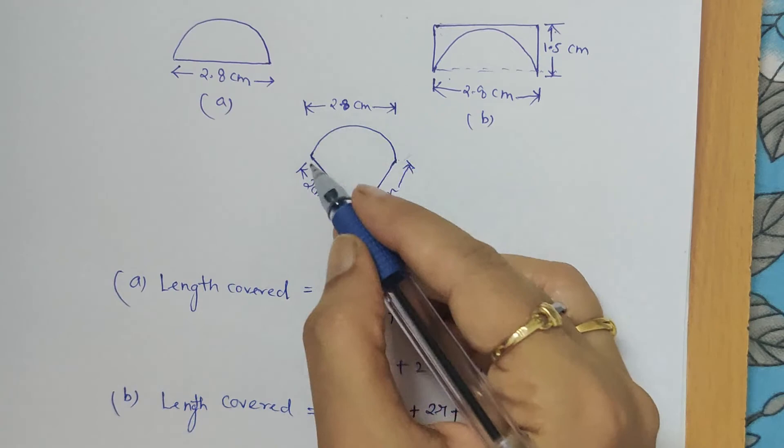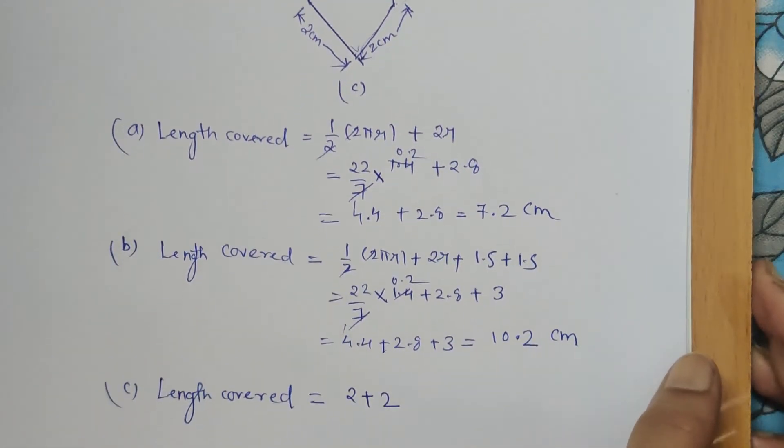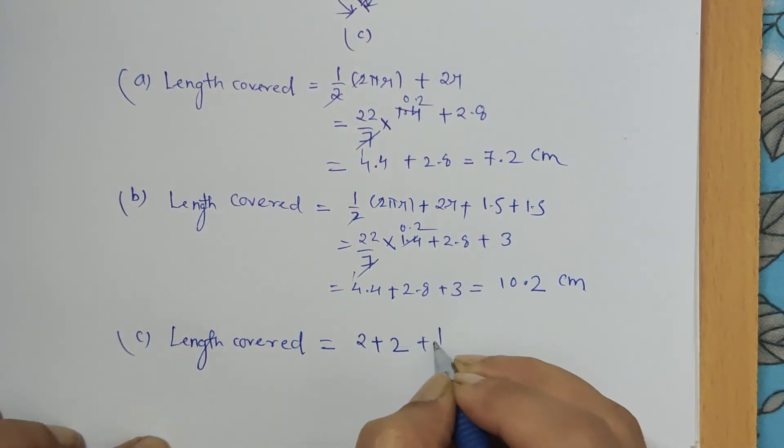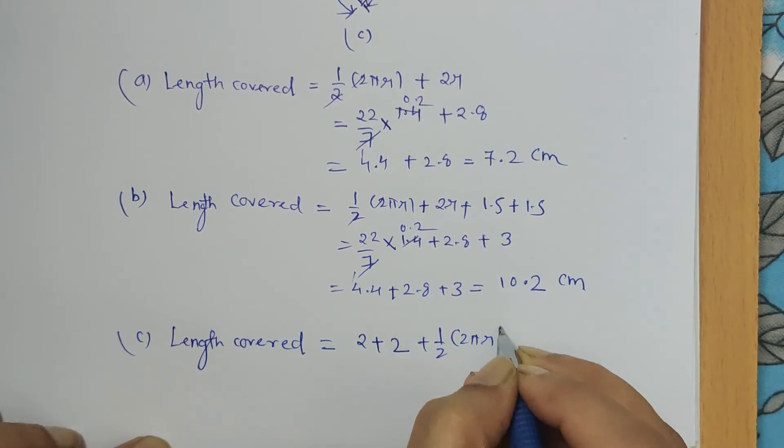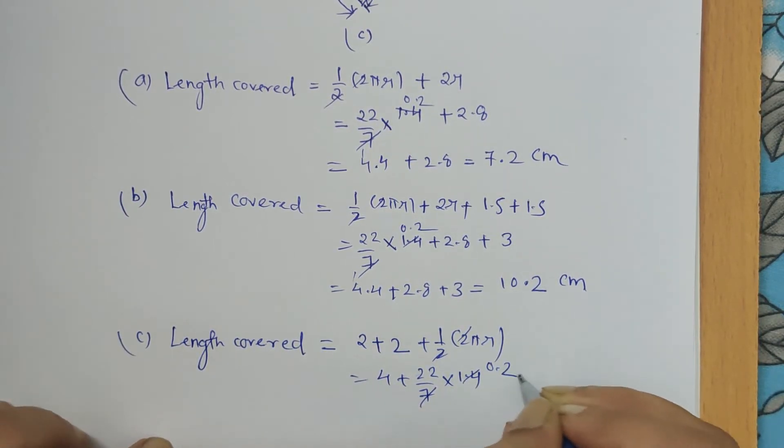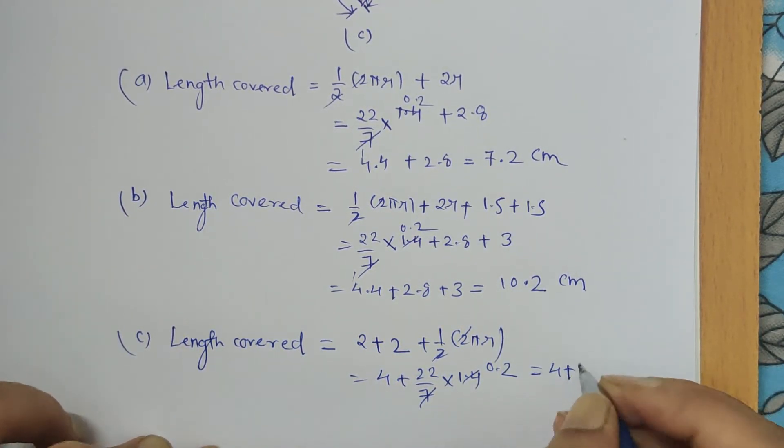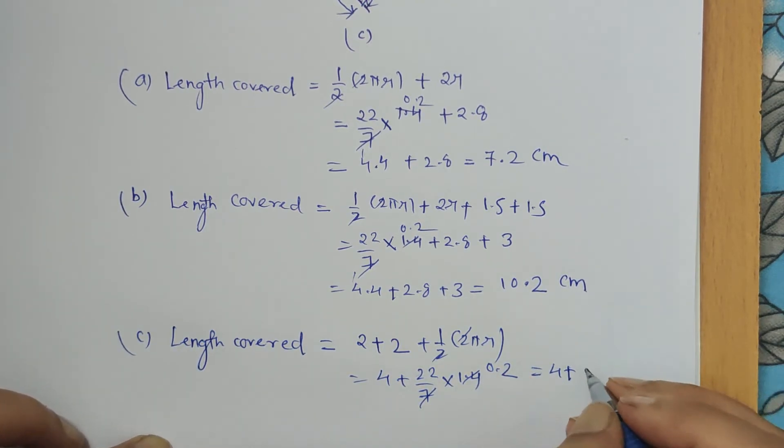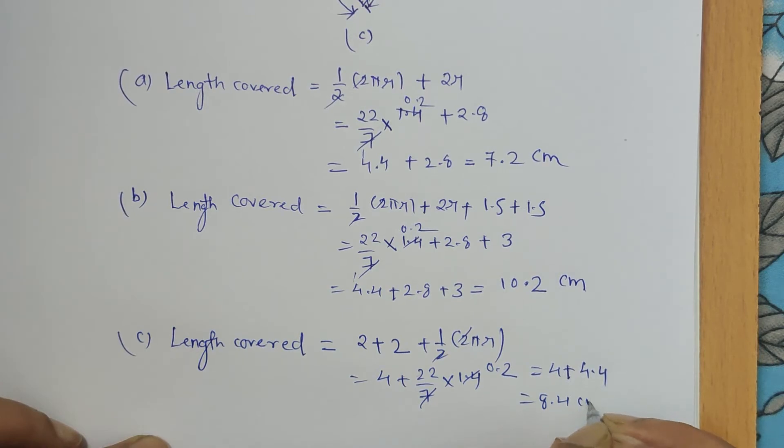And then length of the semicircle, so again half of 2πr. So 2 plus 2 is 4 plus... 2 and 2 gets cancelled, π is 22/7, radius is 1.4, so this is 0.2 times 22 is 4.4. So it is nothing but 8.4 centimeters.